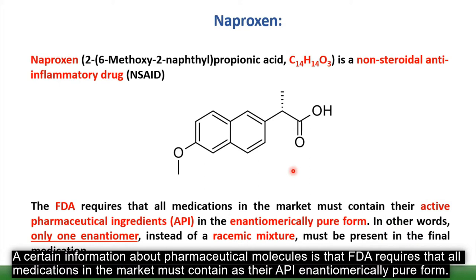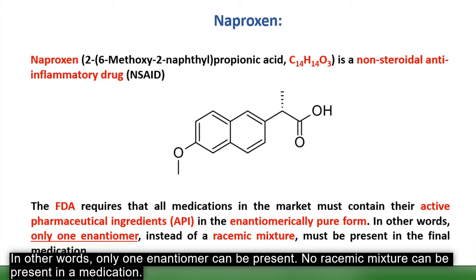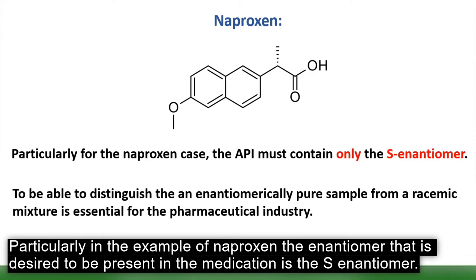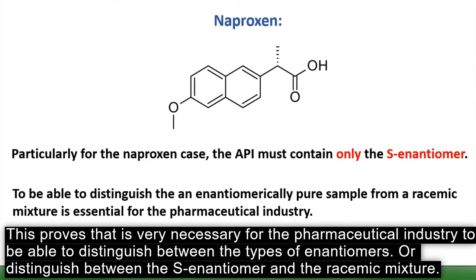Certain information about pharmaceutical molecules: the FDA requires that all medications on the market must contain as their active pharmaceutical ingredient an enantiopure form — in other words, only one enantiomer can be present. No racemic mixture can be present in a medication. In the example of naproxen, the enantiomer desired in the medication is the S-enantiomer.